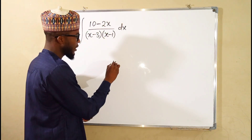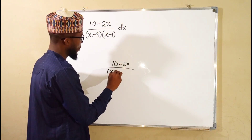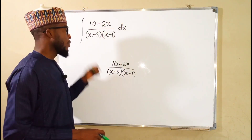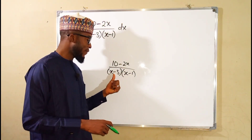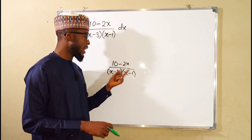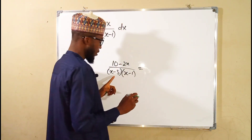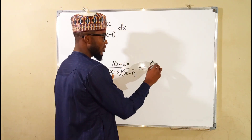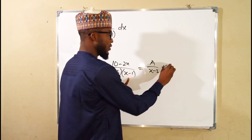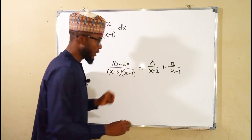We have (10 minus 2x) over (x minus 3)(x minus 1). We consider the denominator — the factors are linear and non-repeated, and the degree of the denominator is higher than the degree of the numerator. Hence we can decompose it: since the factors are linear, the numerator will be a constant over (x minus 3) plus another constant over (x minus 1).